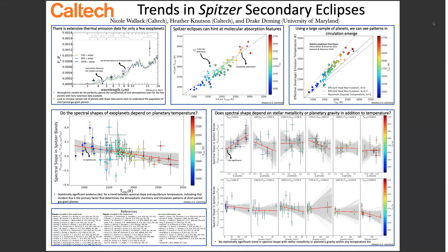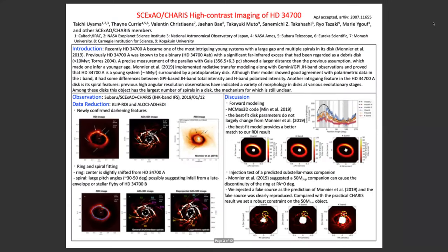For example, using our sample we're able to see a trend in the spectral shape in the Spitzer bands with planet temperature, and we're also able to see that hotter planets seem to have less efficient heat recirculation. Please come talk to me in the poster discussion Slack channel for more information. Thanks. Right on time. All right, Taichi Uyama.